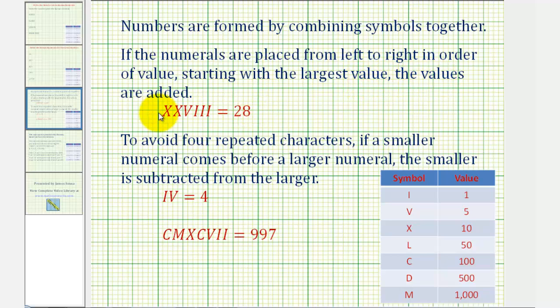As we see here, the two x's represent 20, the v represents five, and the three i's represent three. 20 plus five plus three equals 28.